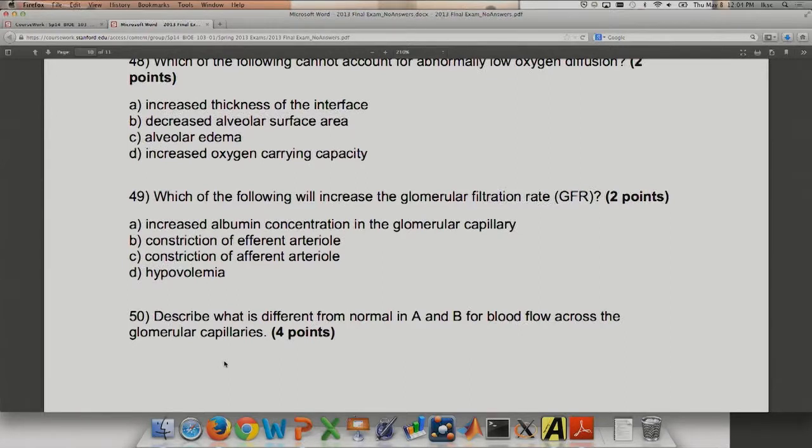Which of the following will increase the GFR, glomerular filtration rate? Increase albumin concentration, constriction of efferent arteriole, or hypovolemia. If you have the afferent into the kidney and then you have the efferent, if you will constrict this and make this smaller, like make this narrower exit, it's actually going to increase your filtration rate because it's just going to feel like it's getting more net volume because less is leaving than coming in. The answer is B for that one.